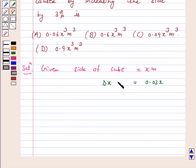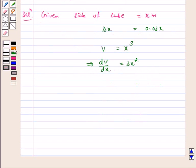Let V be the volume of a cube with side x meter. Therefore, V is equal to x³ and dV/dx is equal to 3x². Let ΔV be the approximate change in the volume.